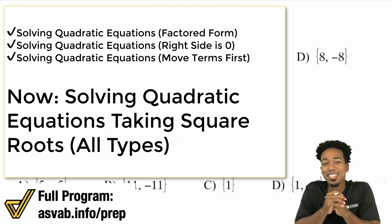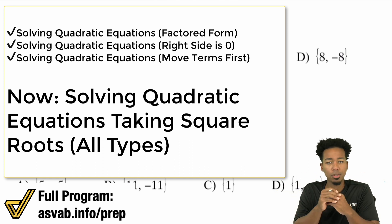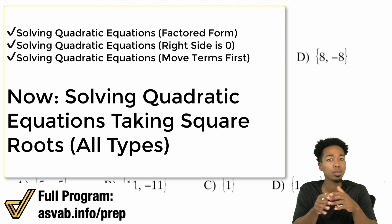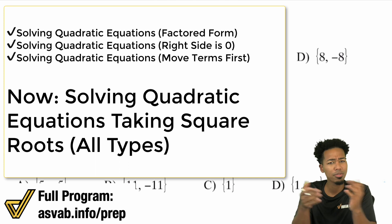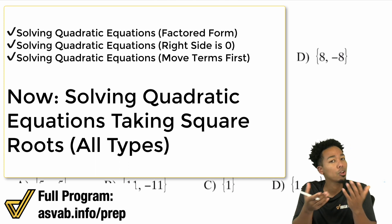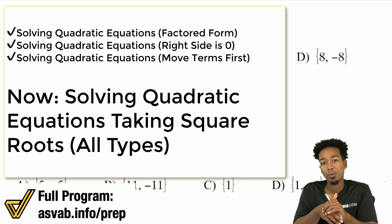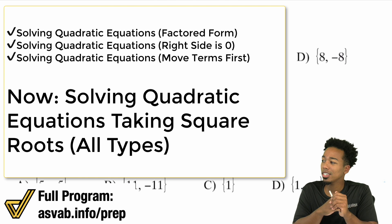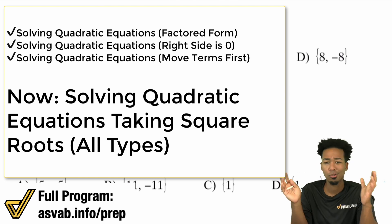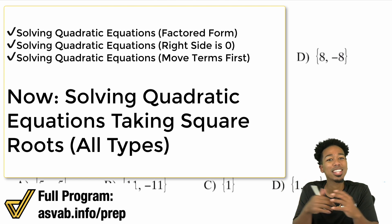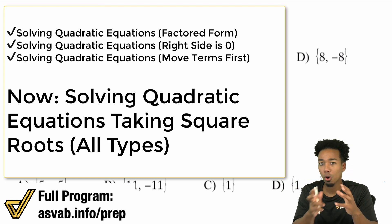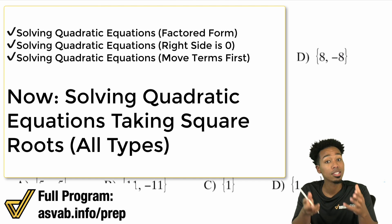Now in this video, we're going to tackle the question: what if you don't have a b term? You have ax squared plus bx — a term that's just x. What if you don't have those? Well, when you don't have these, you can actually ignore the whole 'get a zero by itself' rule. You can just straight up solve. We have plenty of examples, so stay until the end.